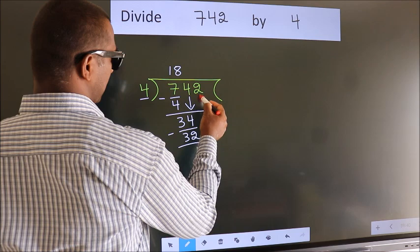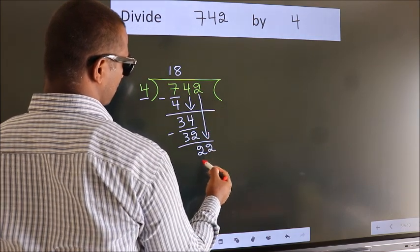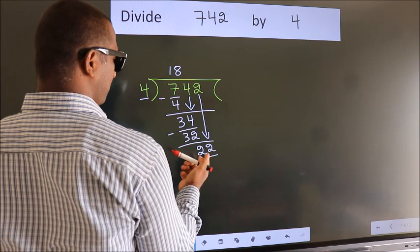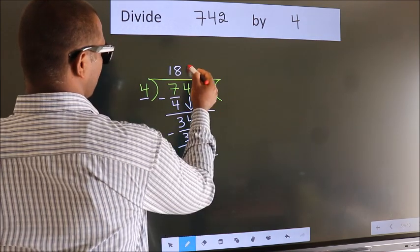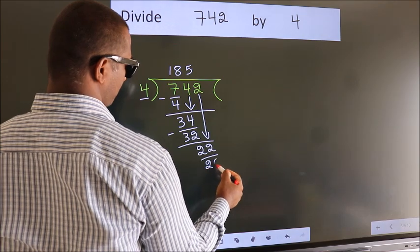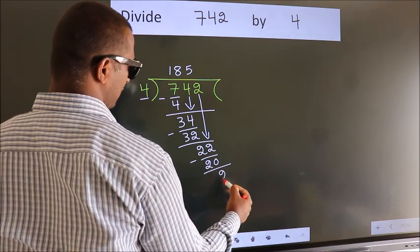After this, bring down the beside number. So, 2 down. So, 22. A number close to 22 in 4 table is 4 5s, 20. Now, we subtract. We get 2.